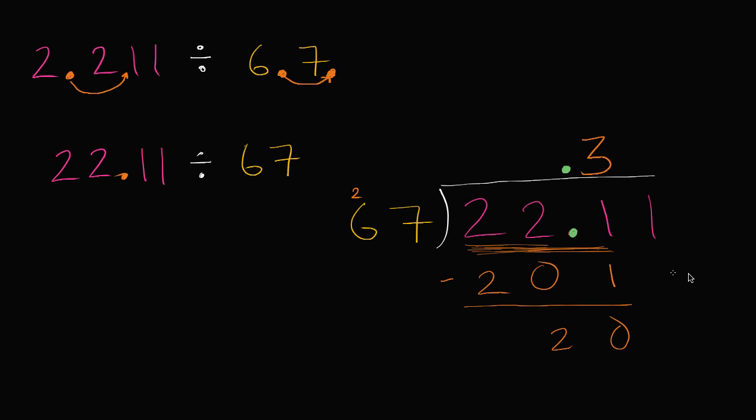So now we can bring down the 1. And we see 67 goes into 201. Well, we just figured that out. 67 goes into 201 three times. Three times. Three times 7 is 1. Carry the 2.